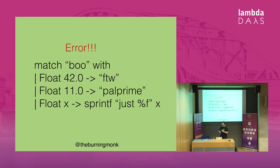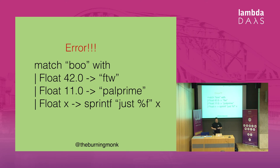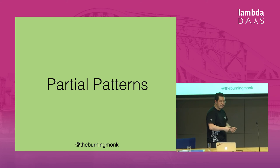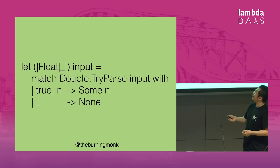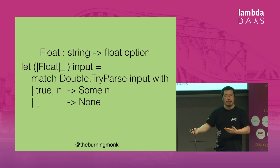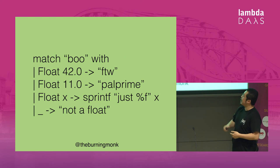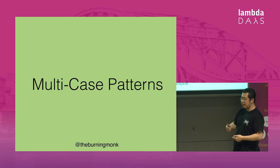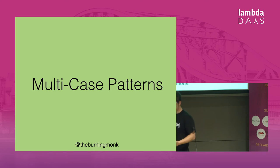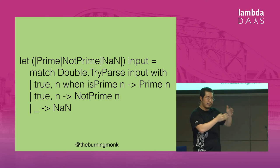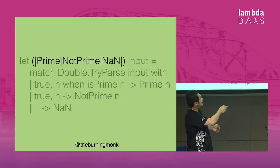Because in our pattern, anything that doesn't parse as a float throws an exception, it doesn't handle unexpected inputs very well. That's why you also have partial patterns, which let you handle unexpected cases better. Here I have a similar pattern, but instead of returning a float it returns a float option, which is F#'s equivalent to the Maybe type in Haskell. Now where we have invalid input, none of the cases match, which is why we have a catch-all clause at the bottom.